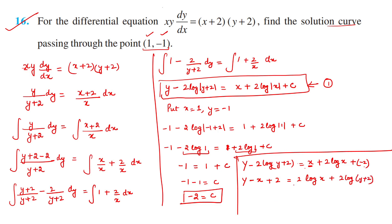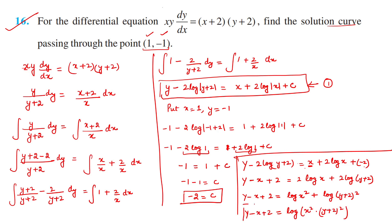Using log properties, the 2 becomes a power: y − x + 2 = log[x²/(y+2)²]. Taking log common from the right: log[x²/(y+2)²]. So y − x + 2 = log[x² / (y+2)²]. This is the required solution curve for question 16. Quite simple once you understand the statement properly.